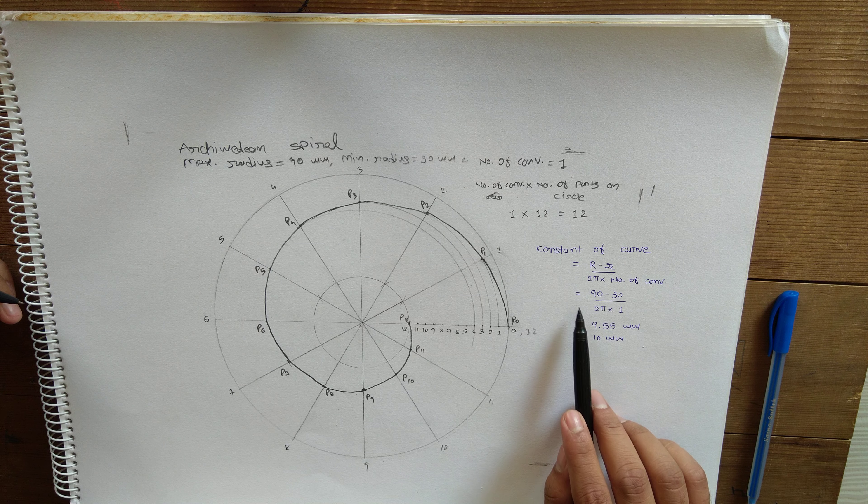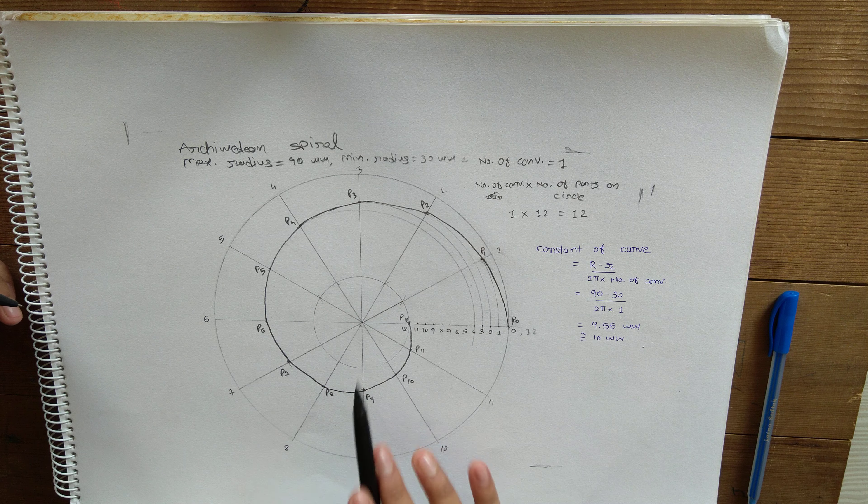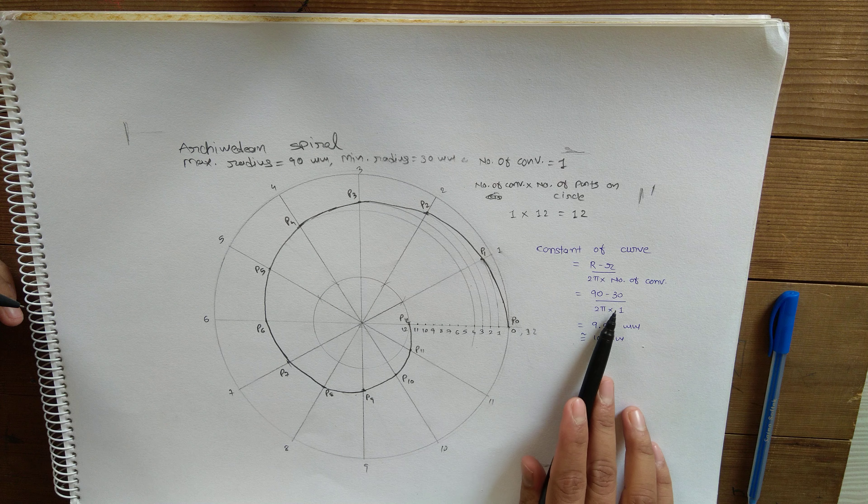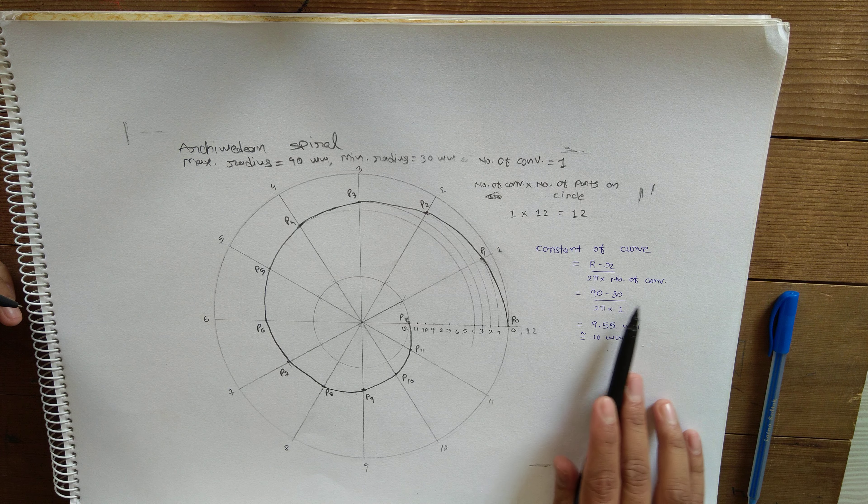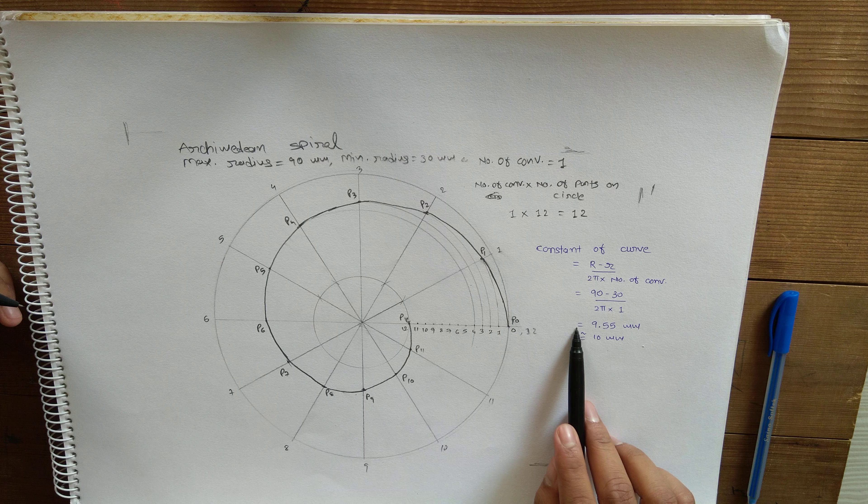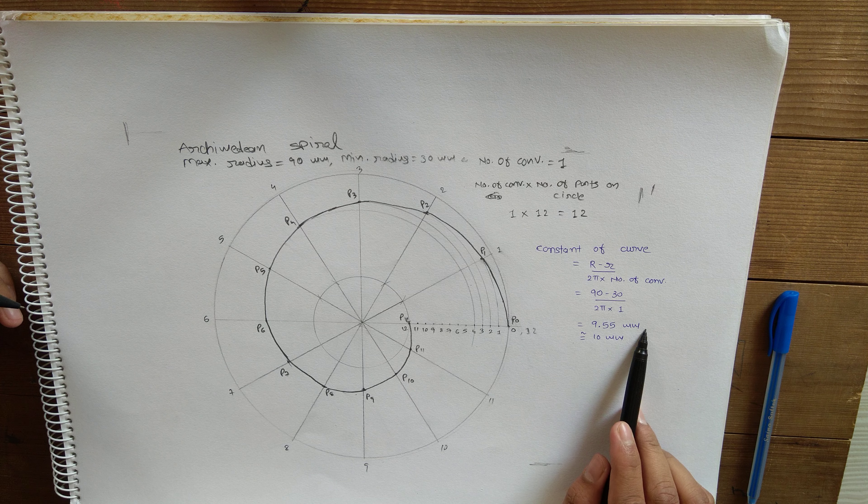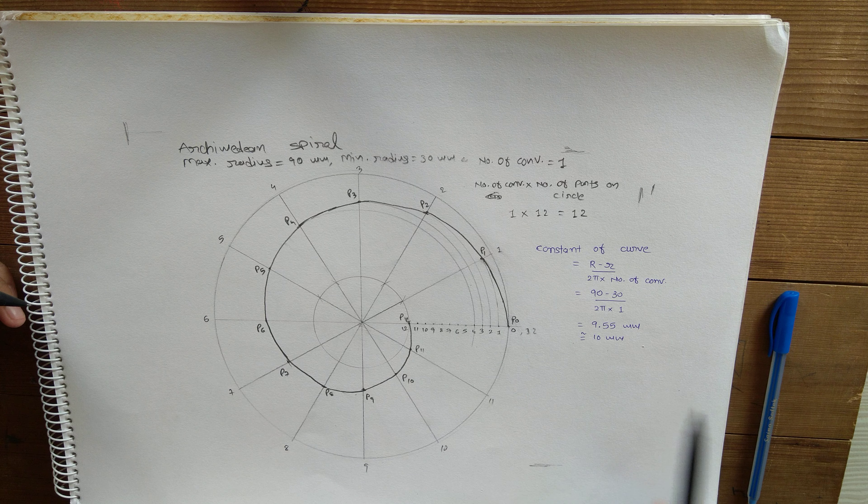number of convolutions. For the present drawing, maximum radius is 90mm, minimum radius is 30mm, divided by 2π multiplied with number of convolutions, which is 1 here. So the result is 9.55mm approximately, you can take this as 10mm.